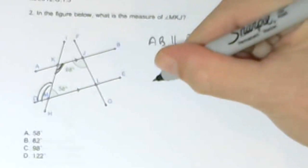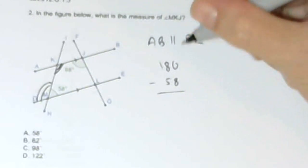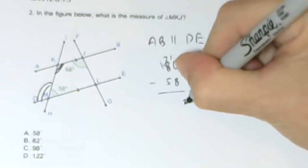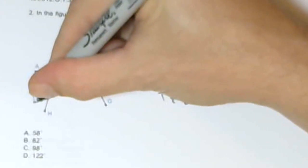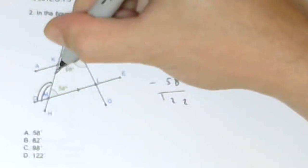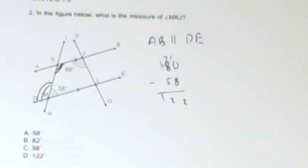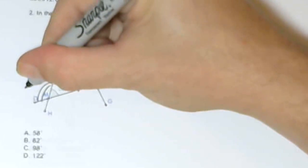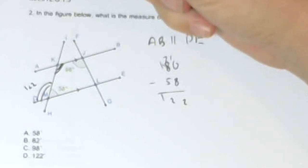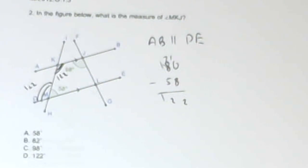So what I'm going to do is take 180 degrees and subtract 58 from that, and I get 122 degrees, because DMK and KML are a linear pair — they are supplementary and add to 180. So I get 122 here, and I get 122 for angle MKJ, which is what I want. The answer is D.